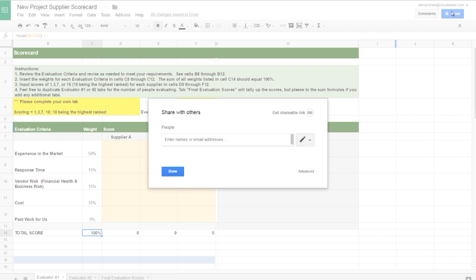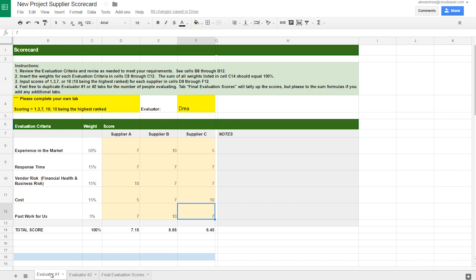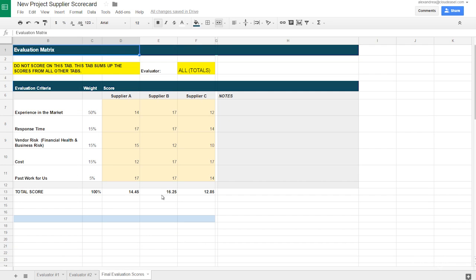Finally, I'll click Share to share the sheet with each of the project stakeholders or evaluators, so they can fill in their own scores. Once they've scored our suppliers, I'll compare results in a summary tab. Looks like supplier B wins. Let's get started on this project.